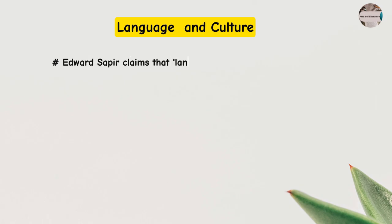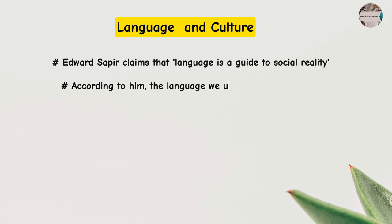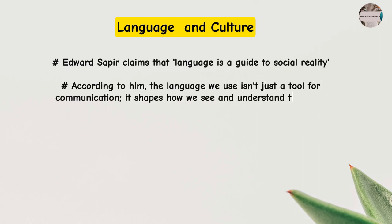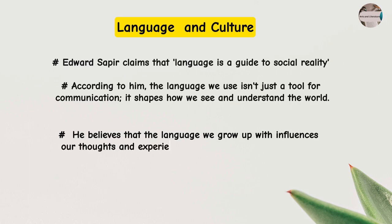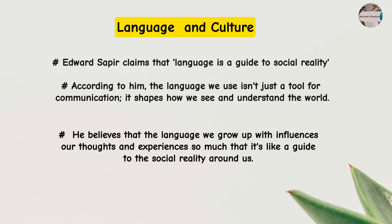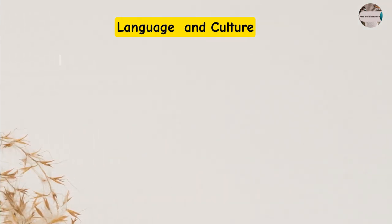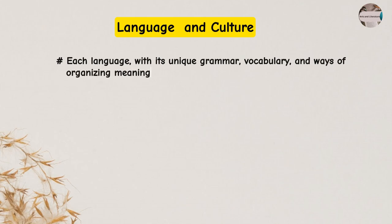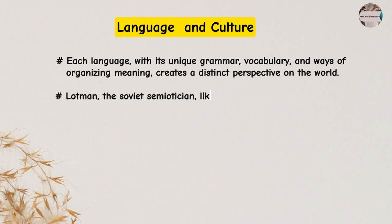Edward Sapir claims that language is a guide to social reality. According to him, the language we use isn't just a tool for communication — it shapes how we see and understand the world. He believes that the language we grow up with influences our thoughts and experiences so much that it's like a guide to the social reality around us. Each language, with its unique grammar, vocabulary, and ways of organizing meaning, creates a distinct perspective on the world.